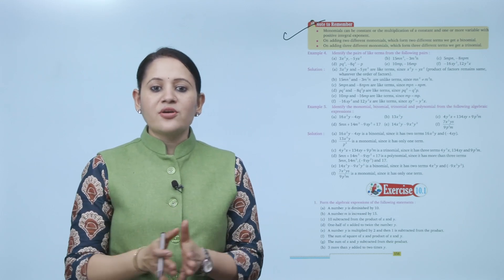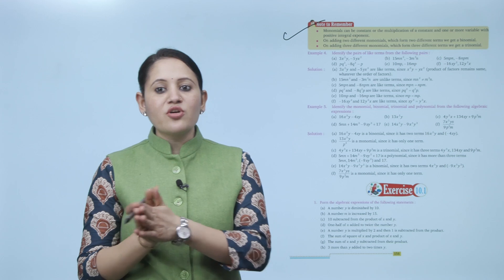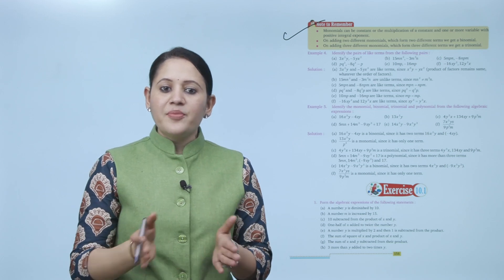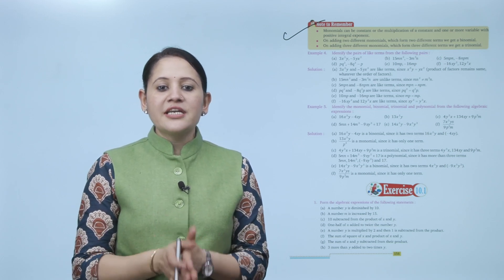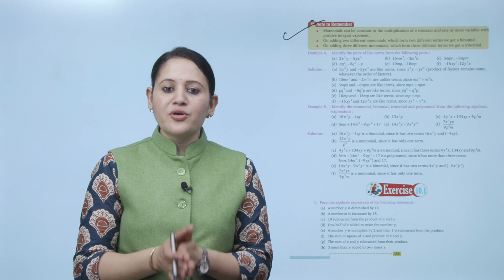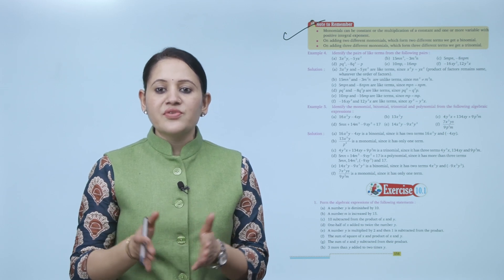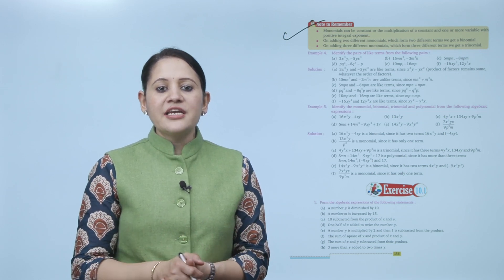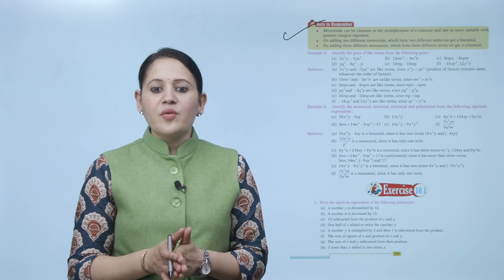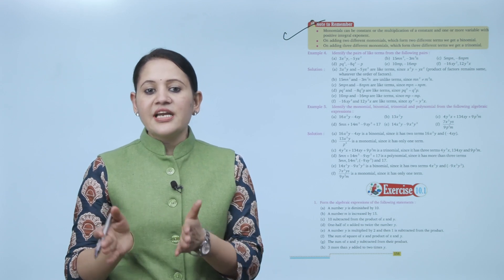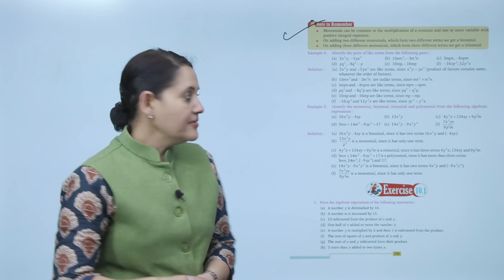Note to remember: a monomial can be a constant or the multiplication of a constant and one or more variables with positive integral exponents. On adding two different monomials which form two different terms, we get a binomial or trinomial.